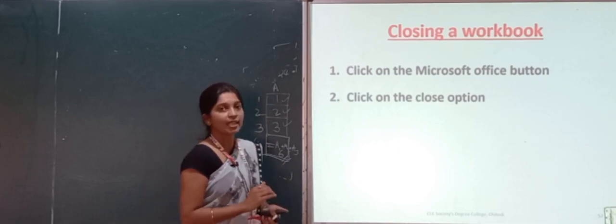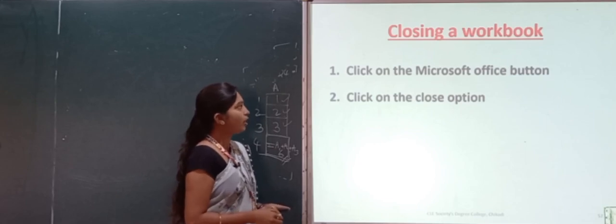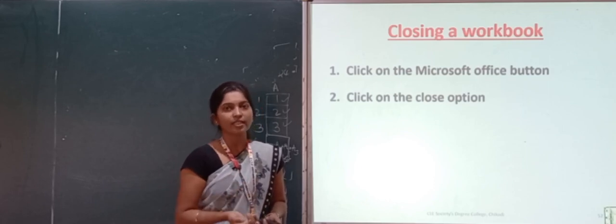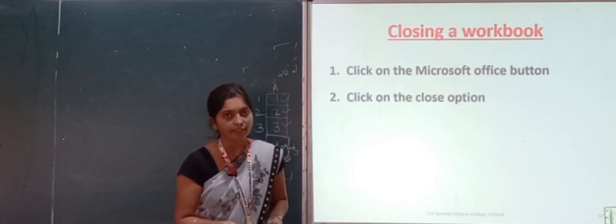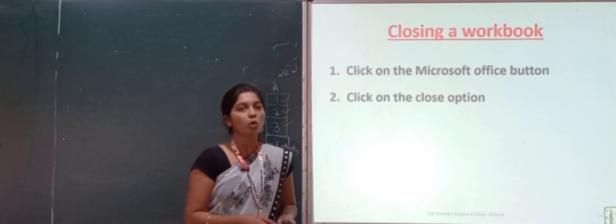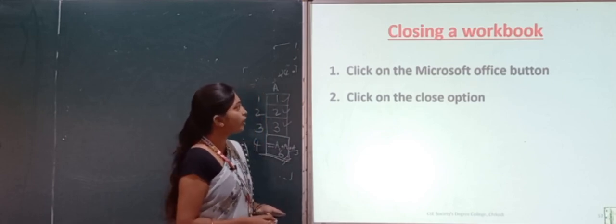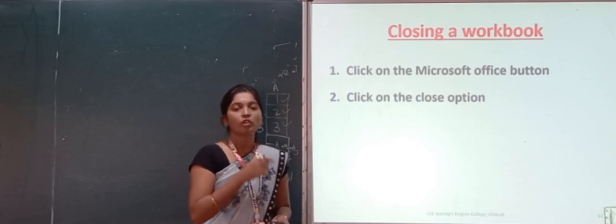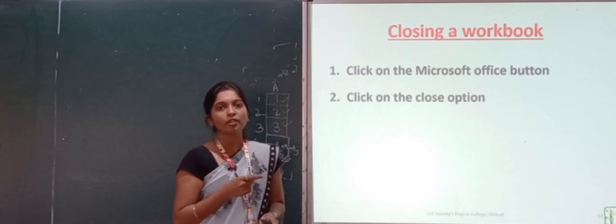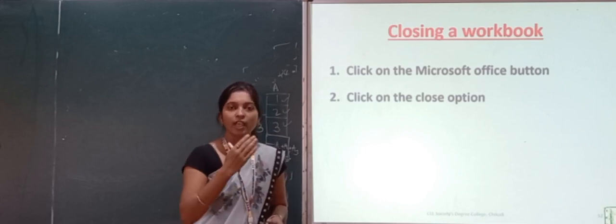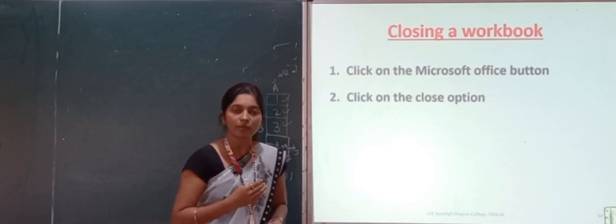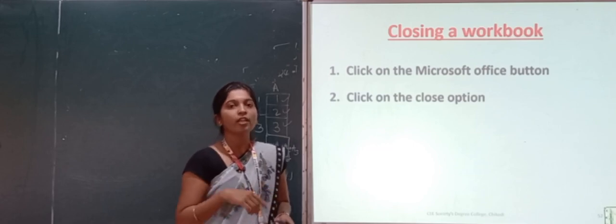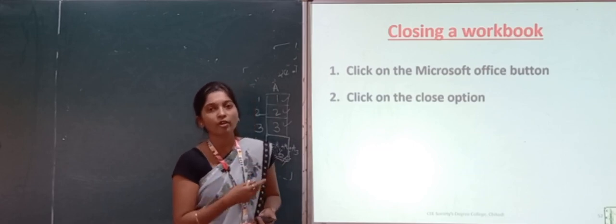Now we will discuss how to close a workbook. Once you have worked on a particular worksheet or workbook, if you don't want to do anything further, you have to close it. Just click on the Microsoft Office button and click on the close option. There will be several options — save, open, print — and one of them is close. If you click on that, it will close your particular workbook window.